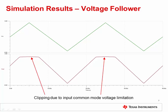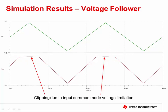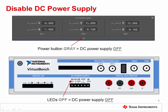VIN is a triangle wave as expected, but VOUT cannot exceed plus 1.5 volts. This is due to the input common mode voltage limitation of the OPA140. Make sure to disable the DC power supply before setting up the test PCB. In the VirtualBench software, click the Power button in the DC power supply area to turn off the power. Check the front panel of the VirtualBench unit to make sure the LEDs are off. Also make sure the function generator is off.